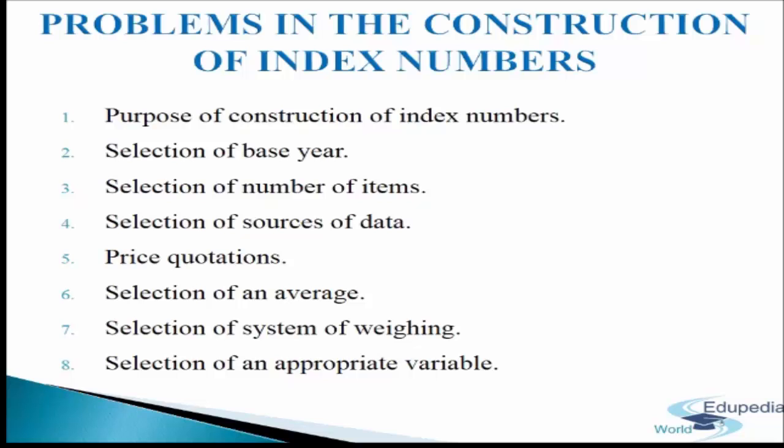Problem 2: Selection of base year. The base period associated with an index number is a period of time used as a basis for comparing changes in prices or quantities in a given period. Index numbers measure changes in the magnitude of variables over time with reference to the base year. The base year should be a normal year, i.e., it should be free from abnormalities like wars, earthquakes, economic fluctuations, floods, famines, etc. The index for the base year is always taken as 100, which helps to comprehend the changes easily.